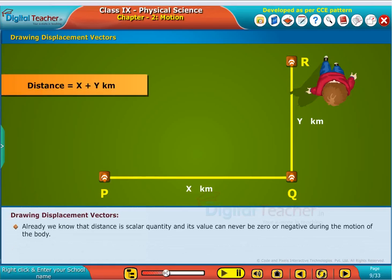Already we know that distance is scalar quantity and its value can never be zero or negative during the motion of the body.